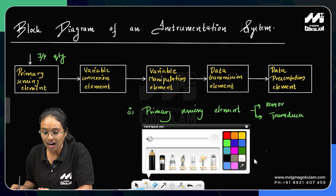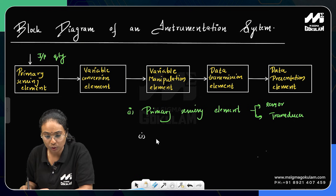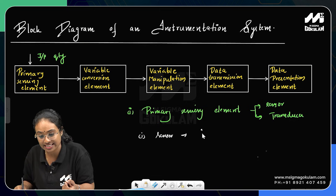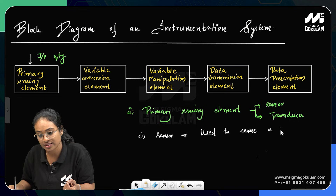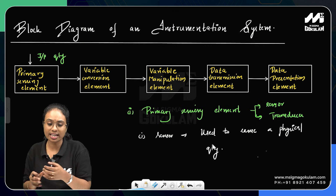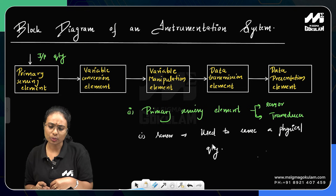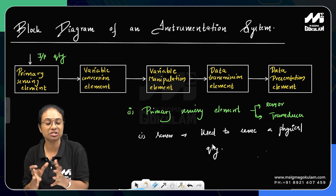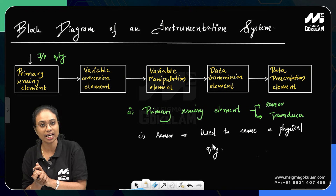What is a sensor? It is a device used to sense a physical quantity. For example, you can measure body temperature using a thermometer. When we go to the hospital, we use a thermometer to measure body temperature.